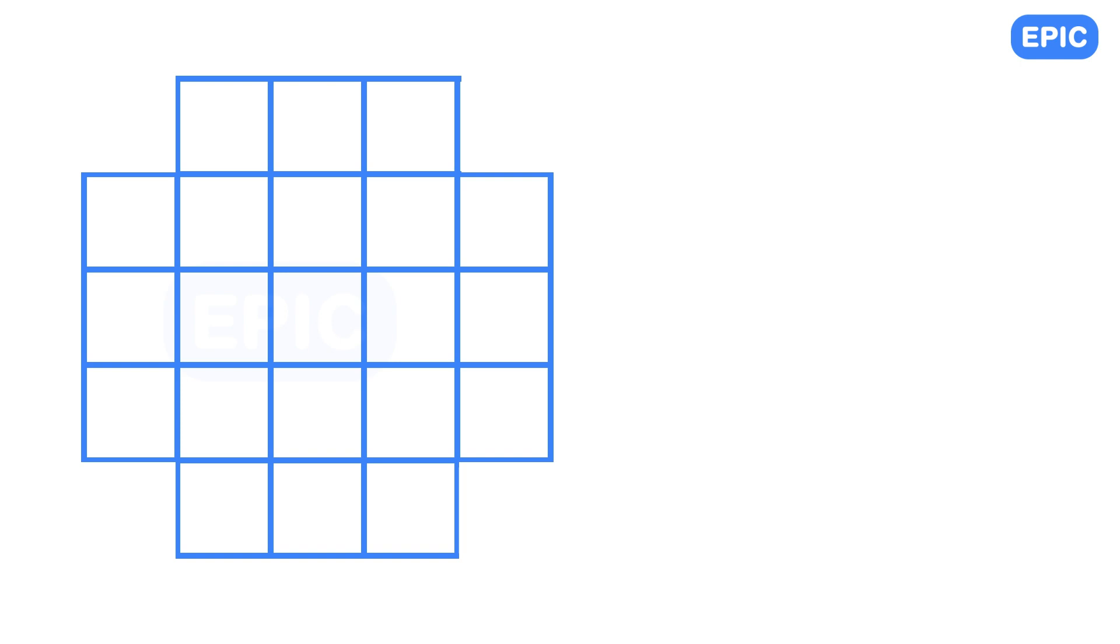Can we have a general formula for this? You must have noticed that we subtracted 4 squares each for 1 to n minus 1 and then subtracted 1 square for n. Hence, the formula will be sum of squares of first n numbers minus 4 into n minus 1 minus 1 or minus 4n plus 3.